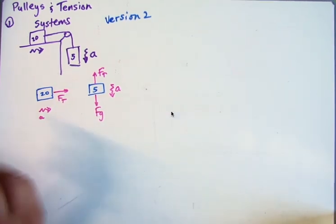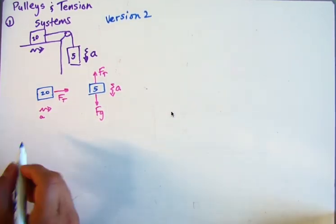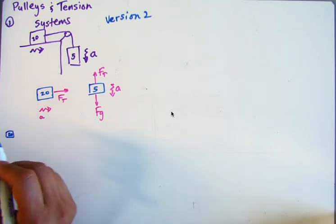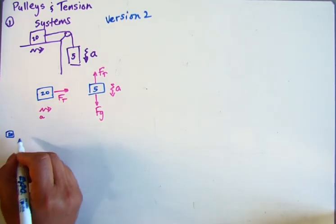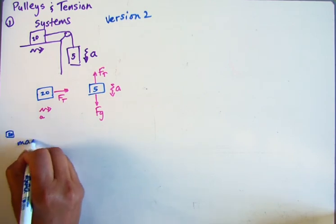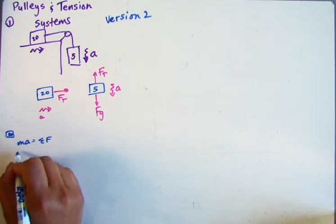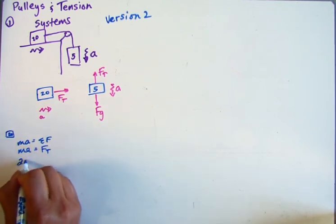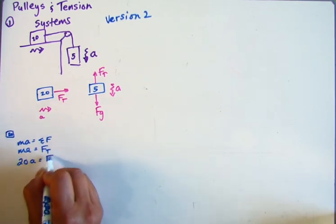So if I look at the 20 kilogram mass, the free body diagram, let's analyze the 20 first of all. For the 20, we can see that Ma equals the sum of the forces. So Ma equals, well, it's just Ft. So we get 20A equals Ft.